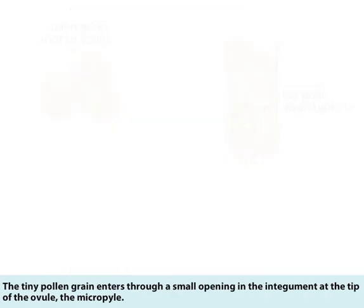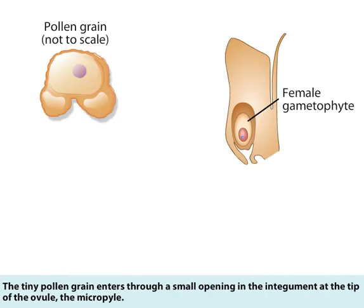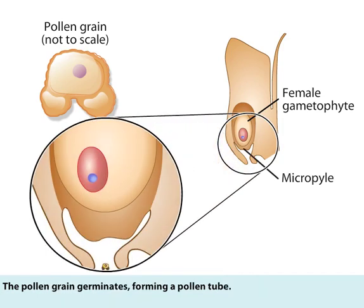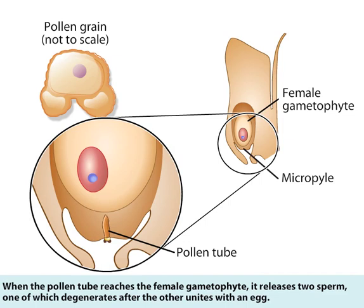The tiny pollen grain enters through a small opening in the integument at the tip of the ovule, the micropyle. The pollen grain germinates, forming a pollen tube. When the pollen tube reaches the female gametophyte, it releases two sperm, one of which degenerates after the other unites with an egg.